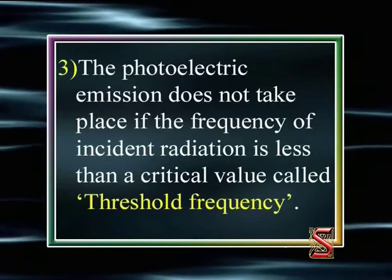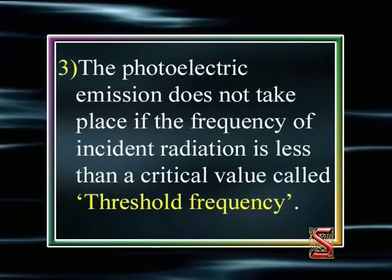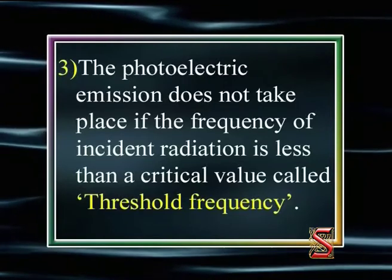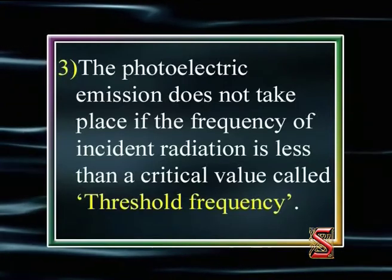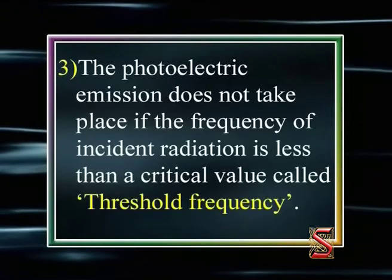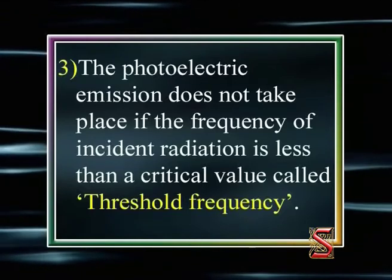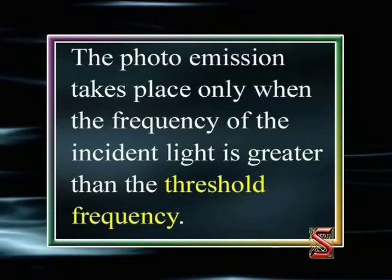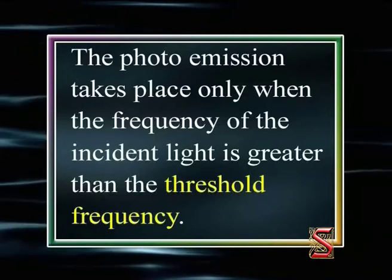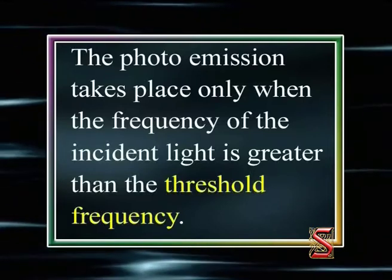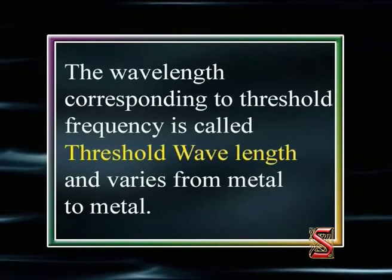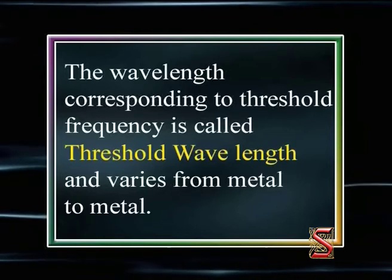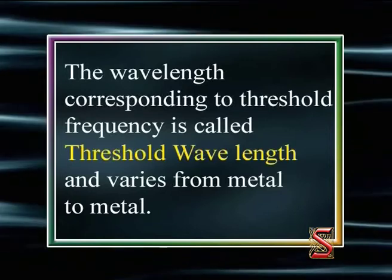The third law is that photoelectric emission does not take place if the frequency of the incident radiation is less than a critical value called threshold frequency, whatever be the intensity. Photoemission takes place only when the frequency of the incident light is greater than the threshold frequency. The wavelength corresponding to threshold frequency is called threshold wavelength and varies from metal to metal.